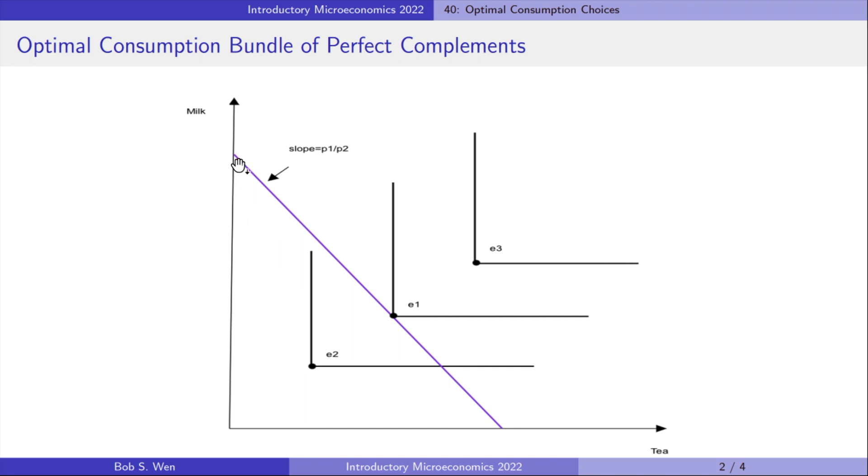The budget constraint is always a straight line with a slope equal to the relative price P1 over P2. The optimal consumption bundle is E1 because it is on the highest indifference curve that touches the budget line.